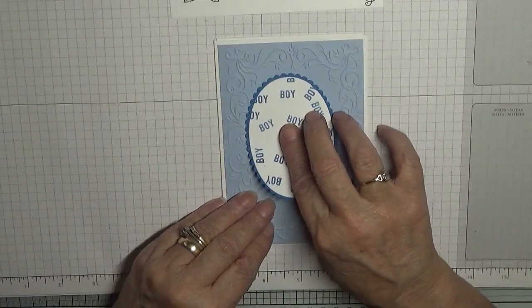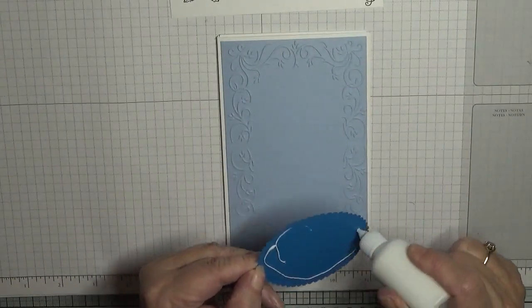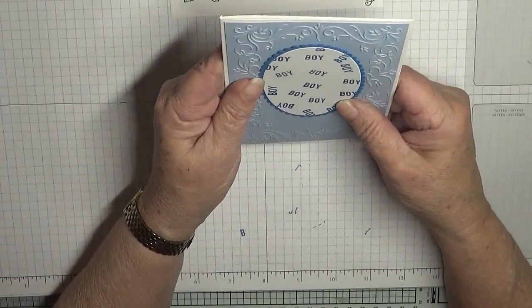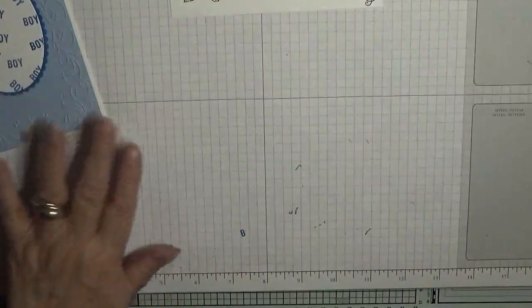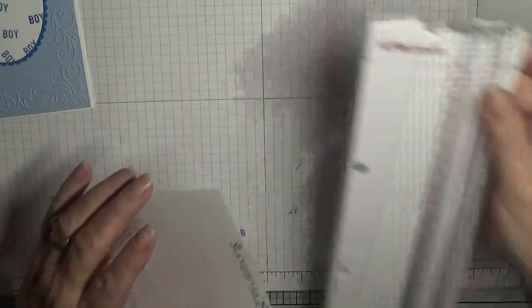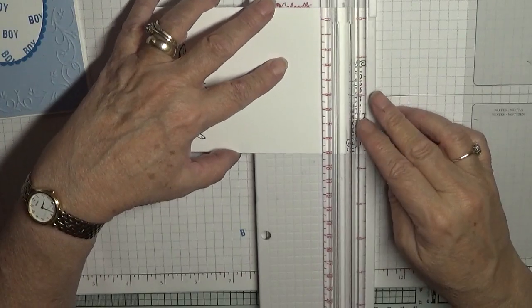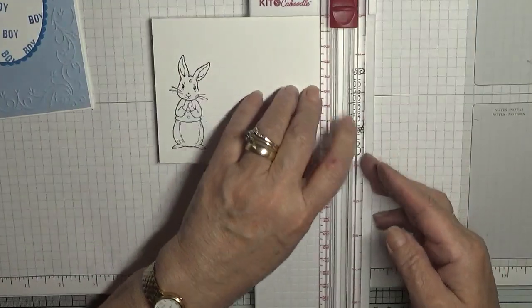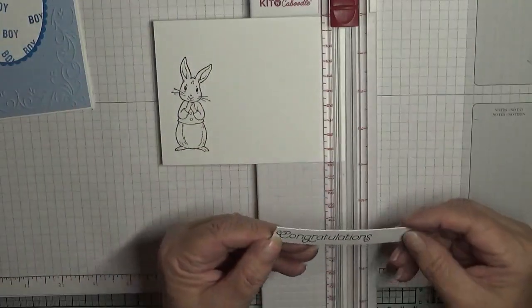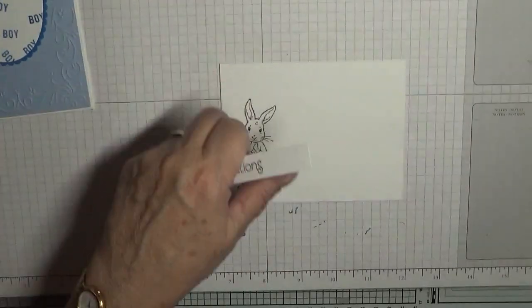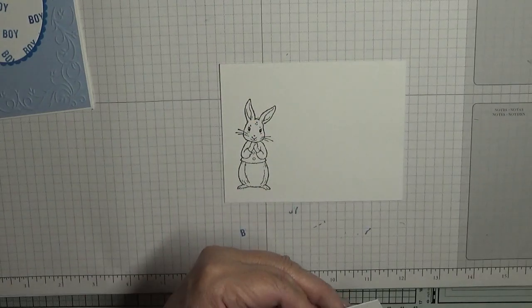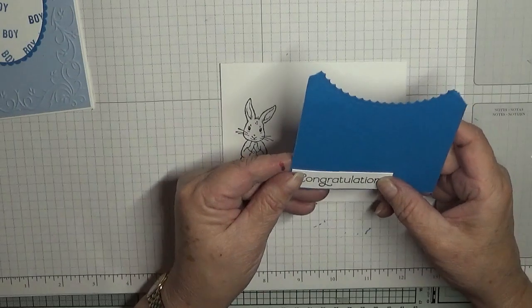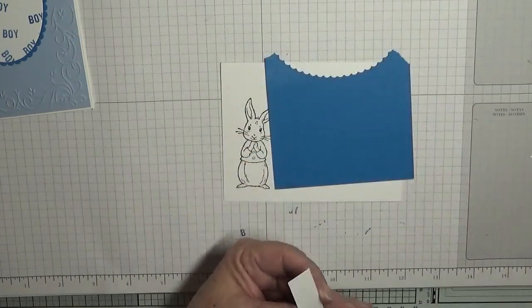And that's just going to lay flat because we're going to stick the rabbit up. We don't want too much dimension. We're going to cut this sentiment off. What we're going to do is stick that on some Pacific Point to frame it and then cut it off.